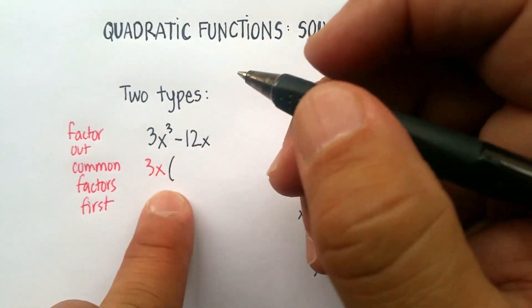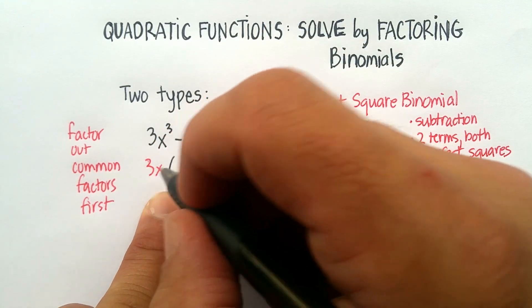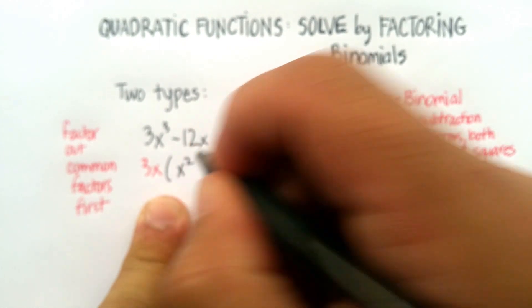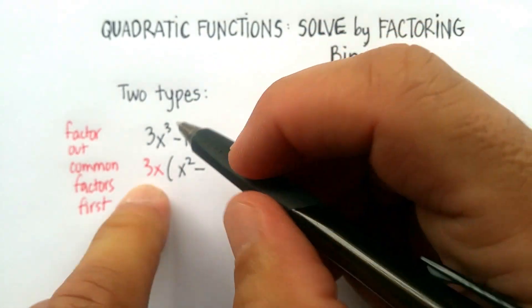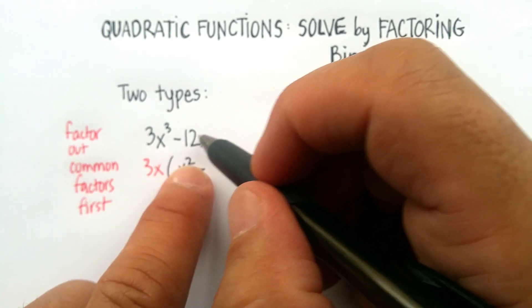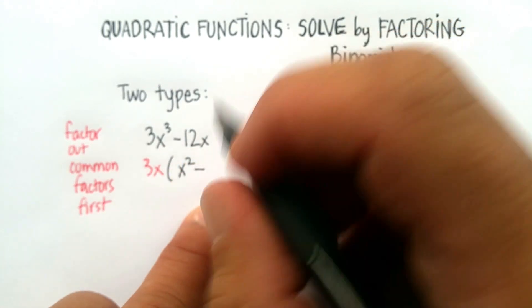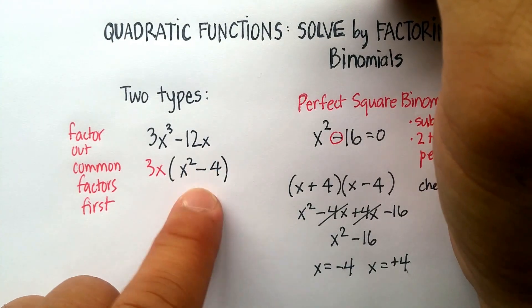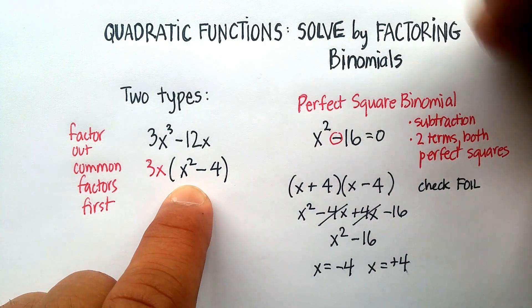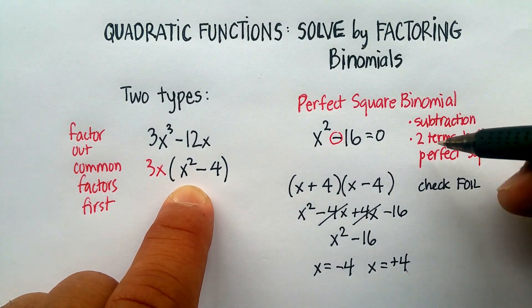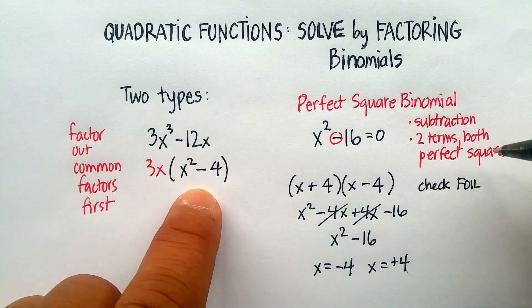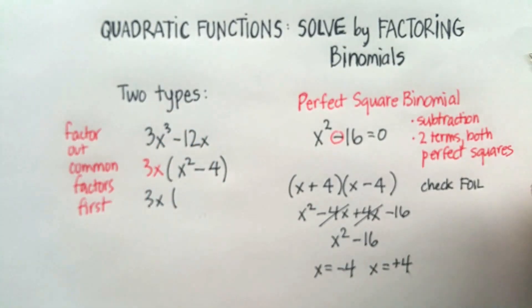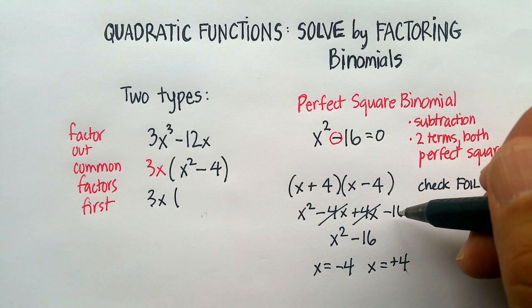So 3x times what gives me 3x³? The answer is x². And I have my subtraction. 3x factored out of 12x is just going to give me 4. Well look what that does: I now have a binomial that's a subtraction and both terms are perfect squares. So I can continue to factor doing exactly the same thing I just did.